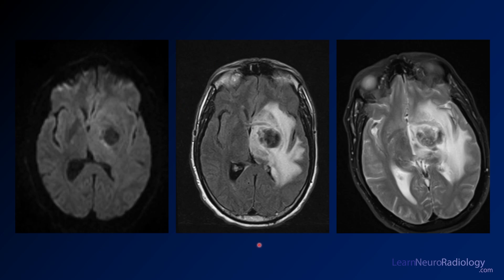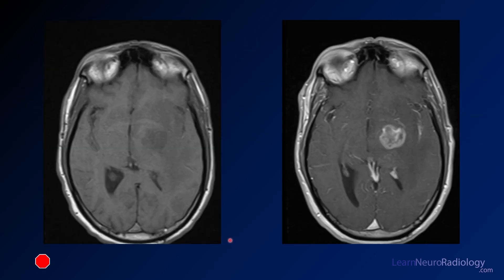We've got some images from an MR of the same patient — diffusion, FLAIR, T2 — to try to characterize that lesion and what's going on. Here we have pre- and post-contrast through this region. Here's your pre-contrast, here's your post-contrast. Looks like it's enhancing.